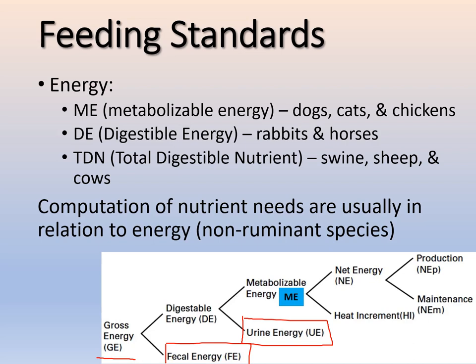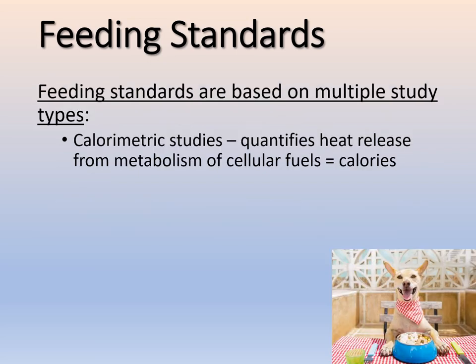When calculating nutrient needs, you usually discuss them in relation to the amount of energy they provide for the animal — very common in non-ruminant species, though a bit different in ruminants. There are multiple types of studies used to make these feeding standards. One is calorimetric studies — essentially a way to find out how many calories are actually in the feed, quantifying the heat release from the breakdown of that food or nutrient to find the max or gross energy.